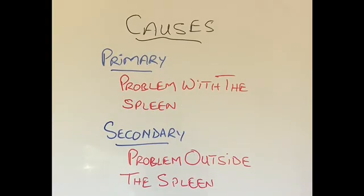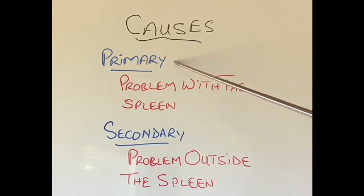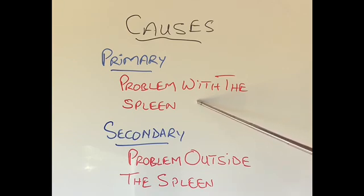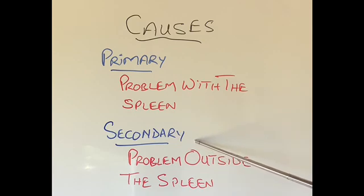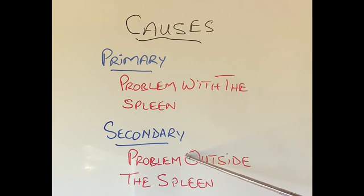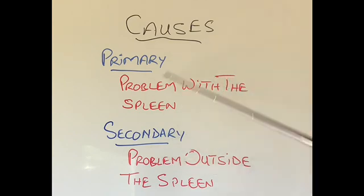So what are the causes of hypersplenism? The list is very, very long, so I'm going to divide it into two main causes. The first cause is what I'll call the primary cause, meaning the main problem is with the spleen itself — there is something wrong with the spleen. The second is the secondary cause, which means the spleen is an innocent bystander — nothing is wrong with it, but something wrong outside the spleen is affecting the spleen and causing it to become overactive.